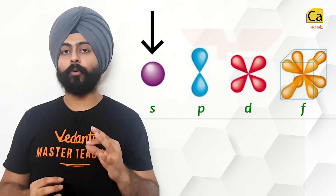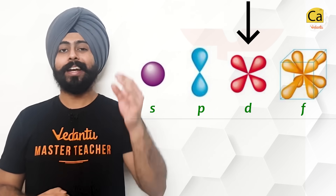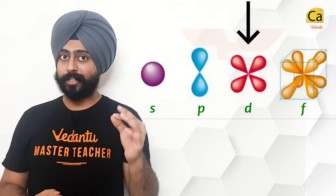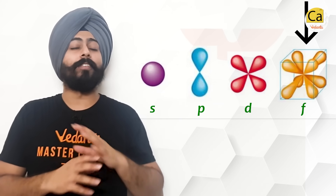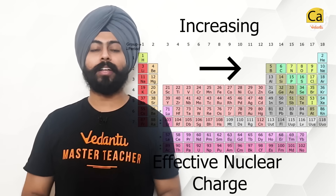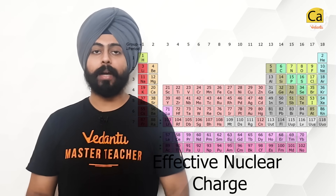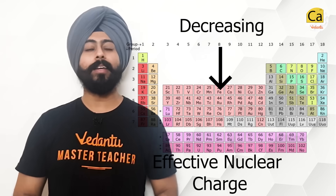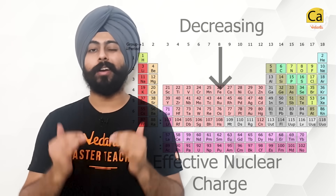S-orbital electrons show the most amount of shielding, then p-orbital electrons, d-orbital electrons have very less shielding effect, and f-orbital electrons have a very, very poor screening effect. Talking about the general trend of effective nuclear charge: when you go from left to right in the periodic table, the effective nuclear charge keeps on increasing, and when you go from top to bottom, it keeps on decreasing.